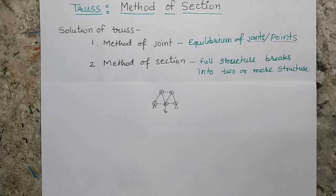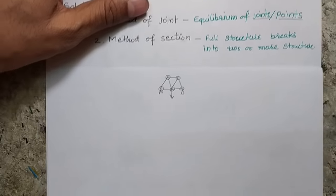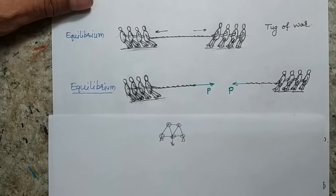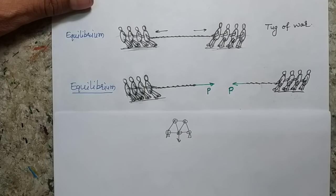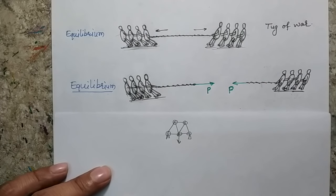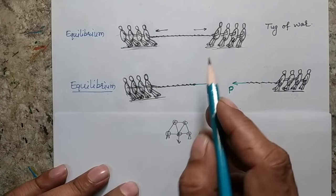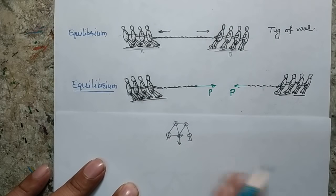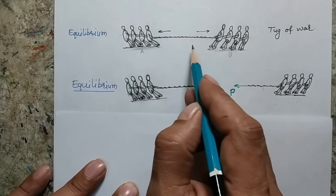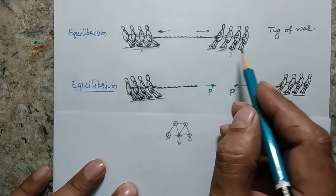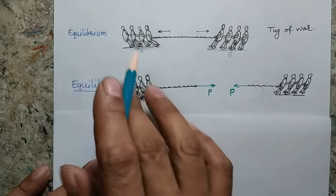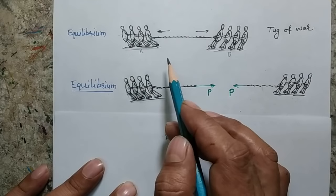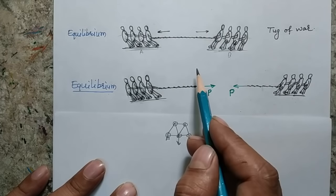Now let's start the method of section. I would like to introduce it by taking a simple real-life problem. Suppose we consider a case of tug of war — there are two teams, team A and team B, and both teams are trying to pull the rope towards their side. At this instant, the system is in equilibrium, meaning both teams are not moving in any direction.